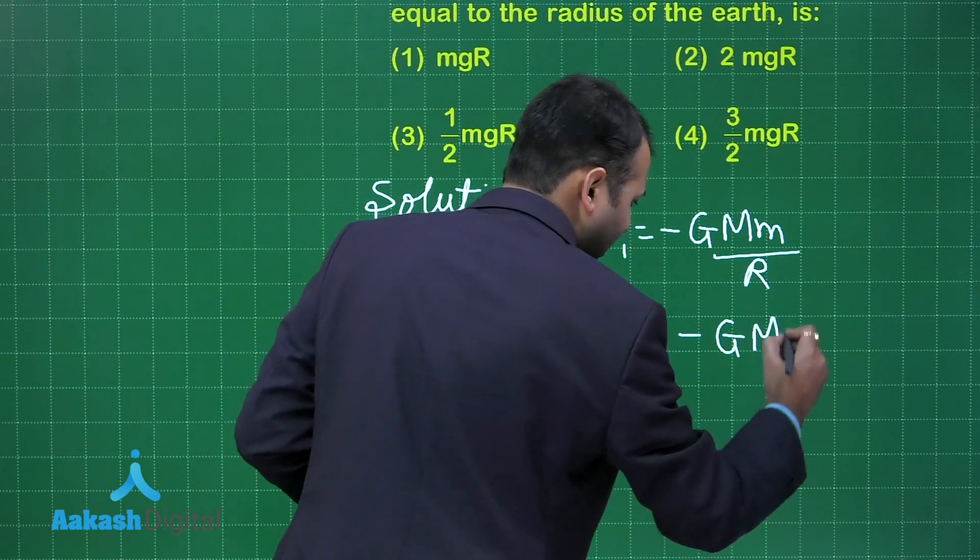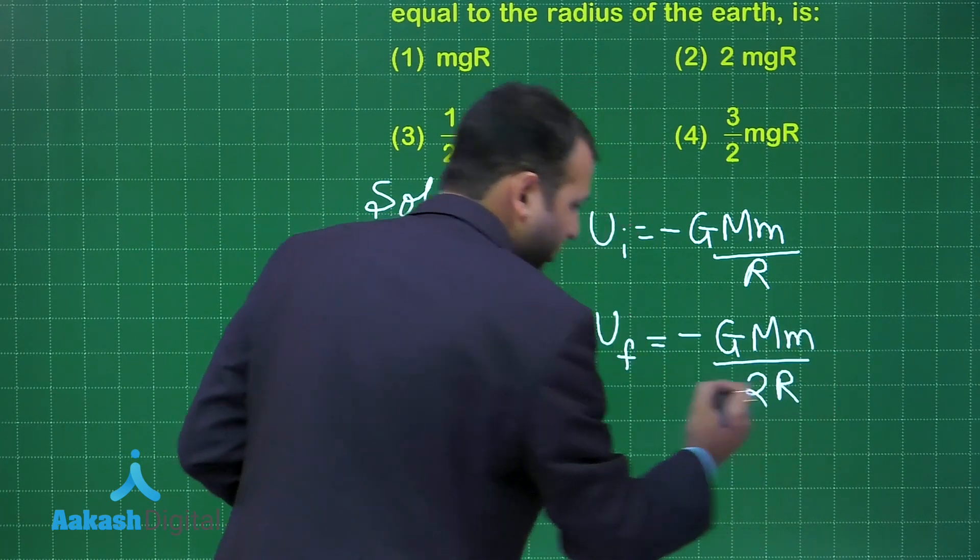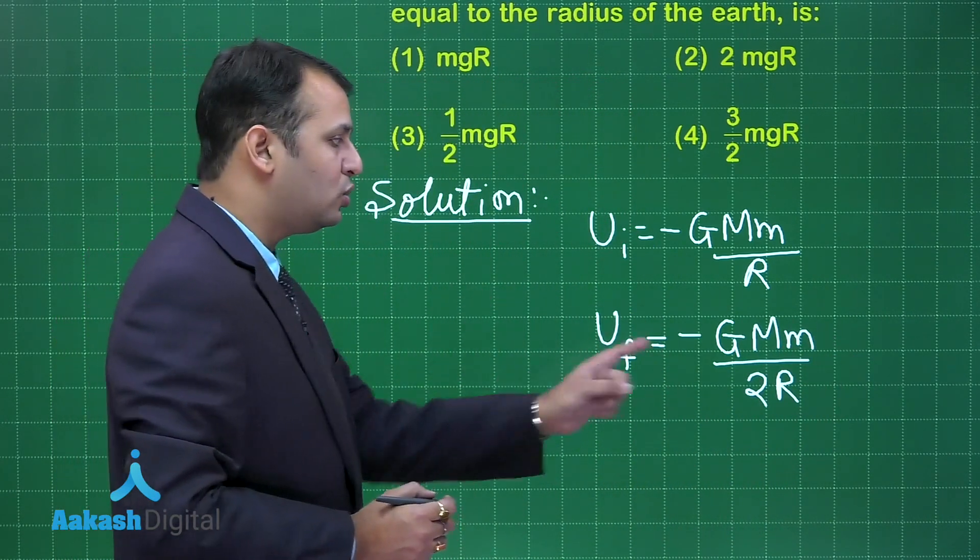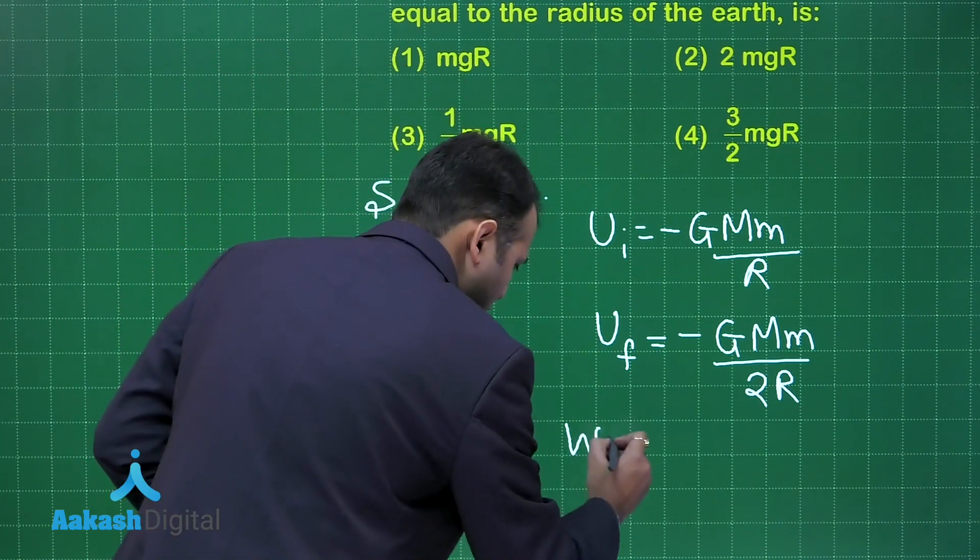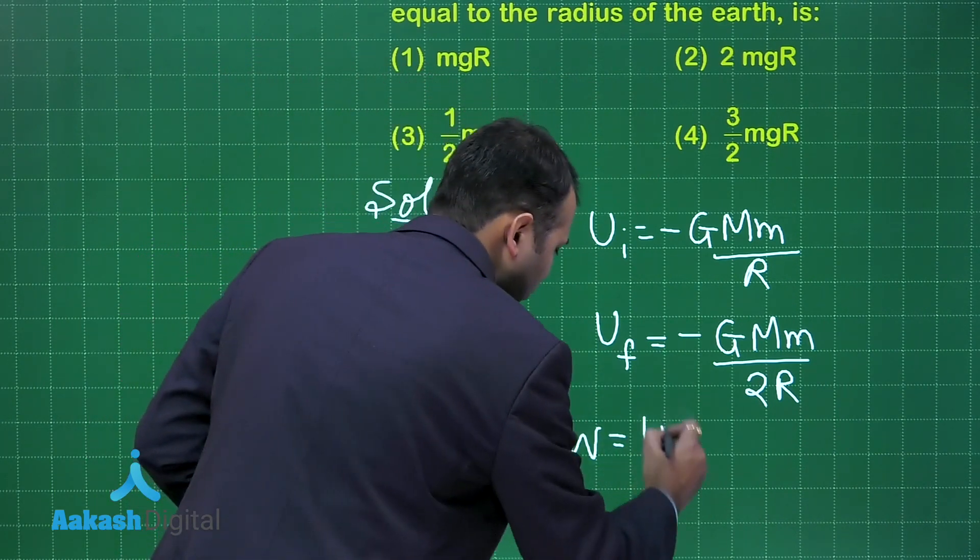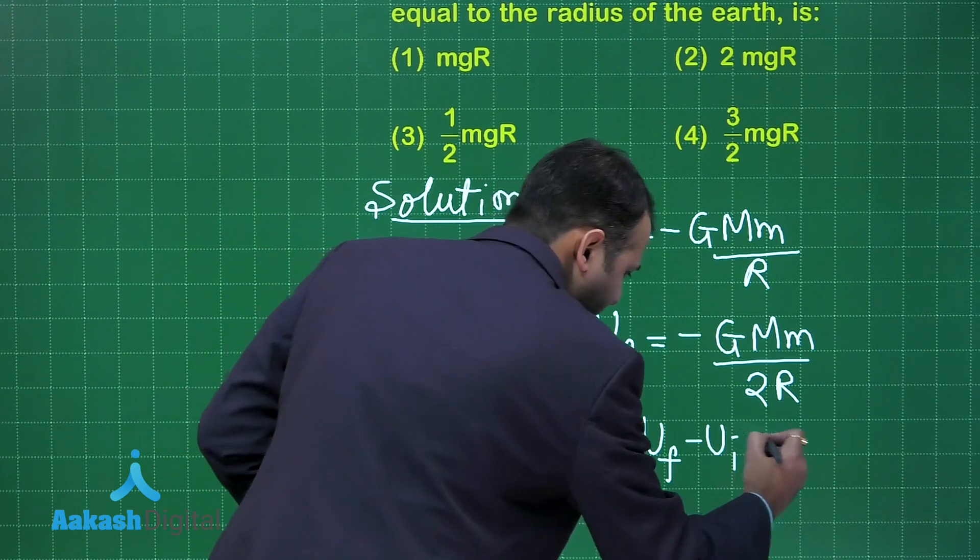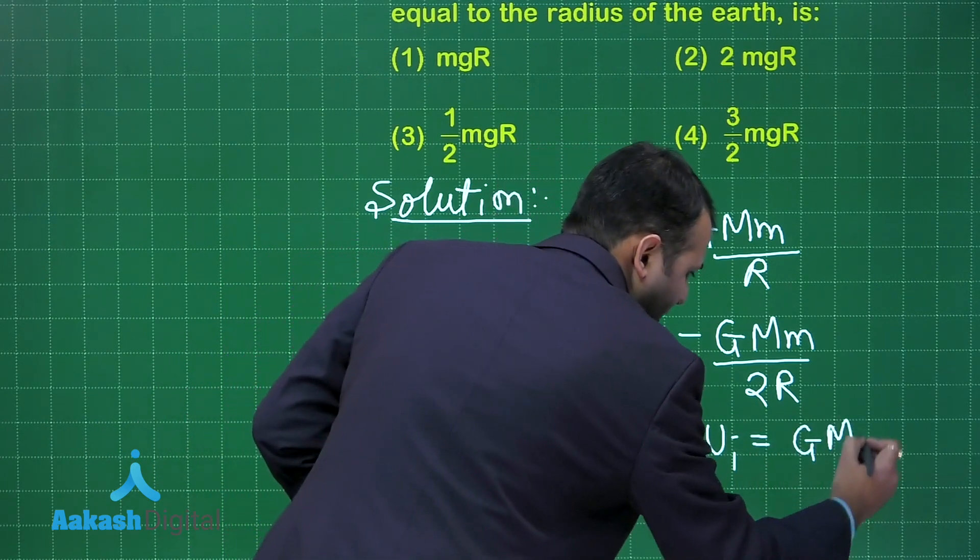And work done or the potential energy stored would be simply U_final minus U_initial which would be GMm/2R.